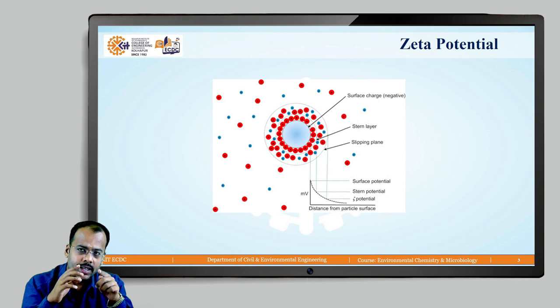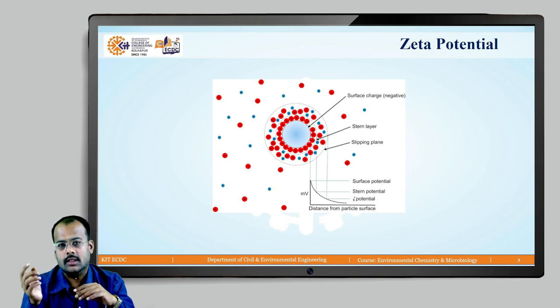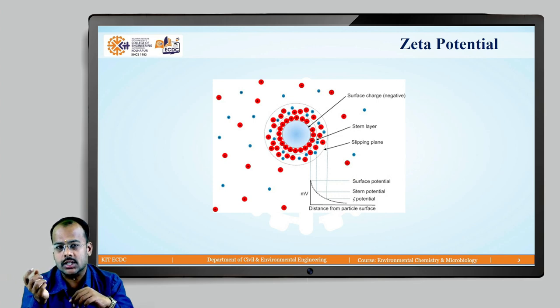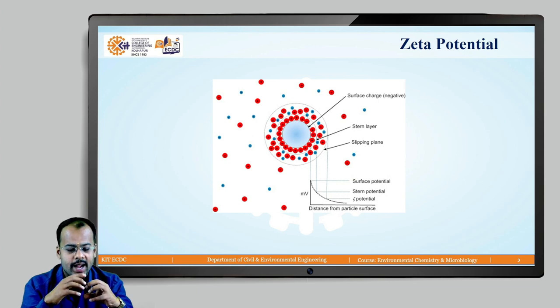The inner part is negative. So automatically, the other atoms will come to the stern layer which is made up of positive because negative and positive, there is an attraction and it is near to the surface. That is why they are closely held to each other.